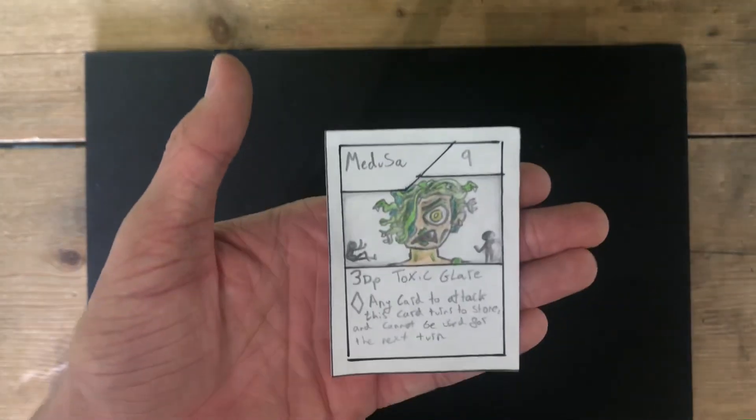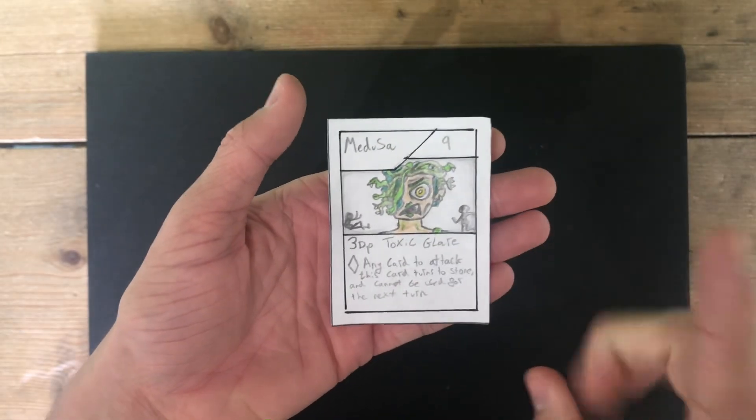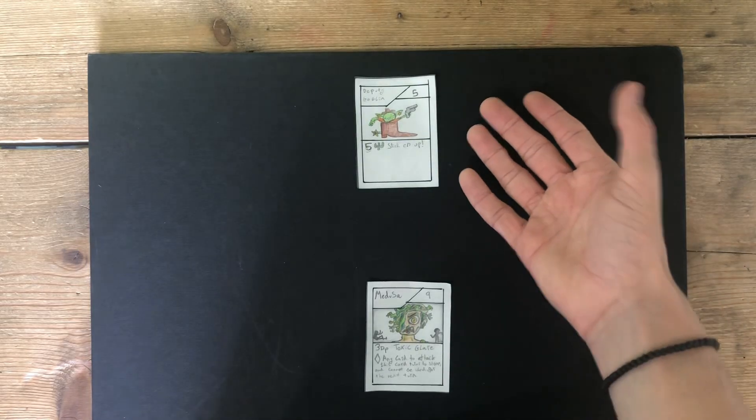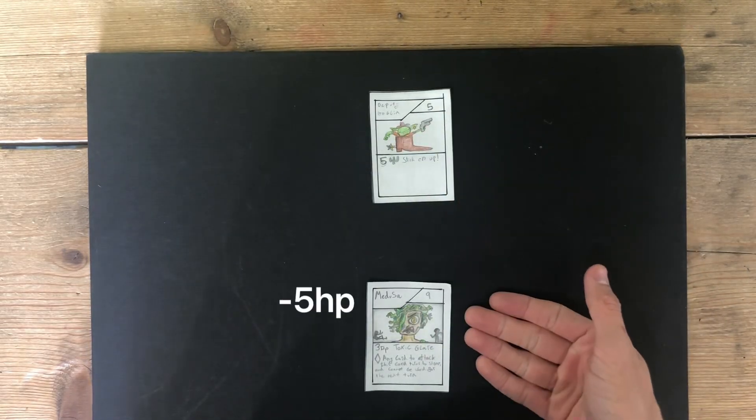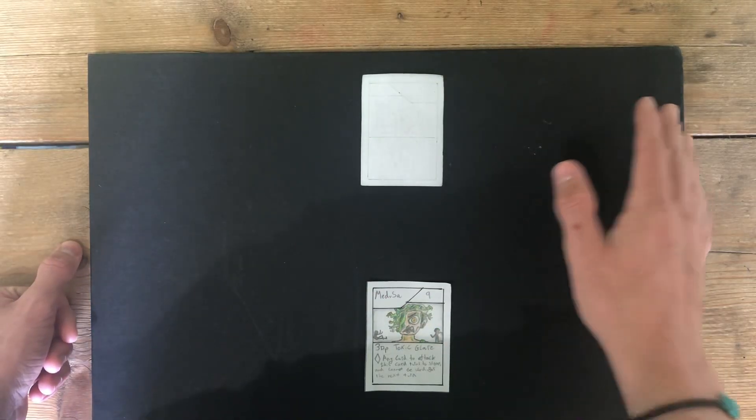The next card is Medusa, with 9 HP, 3 damage. And any card to attack Medusa turns to stone, where they cannot be used for 1 turn. Here, if it is my opponent's turn, they attack me, I take the damage. But their card turns to stone, so their next turn, they are not allowed to use it.